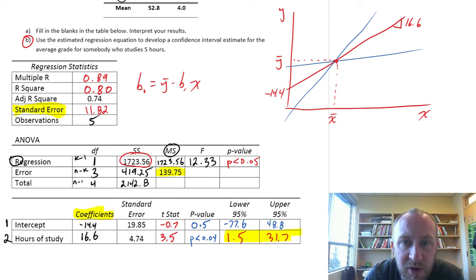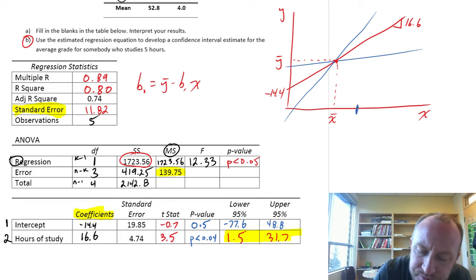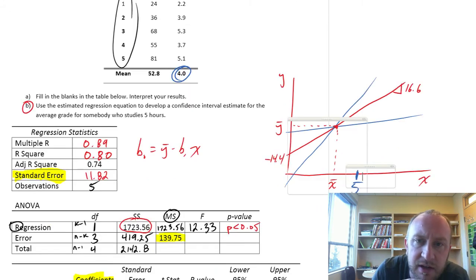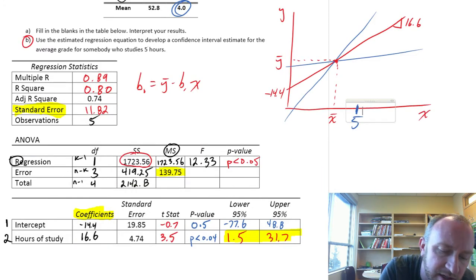So here we'll start with, we have someone who studies five hours a week. So five is going to be out here. Because I know, going back to our data, our average number of hours spent studying was four. So here's five out here.